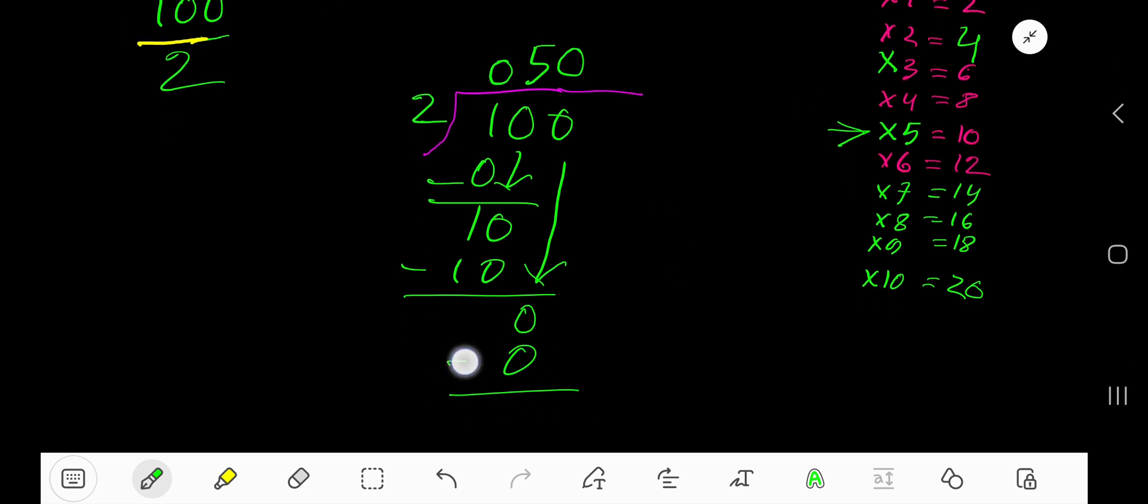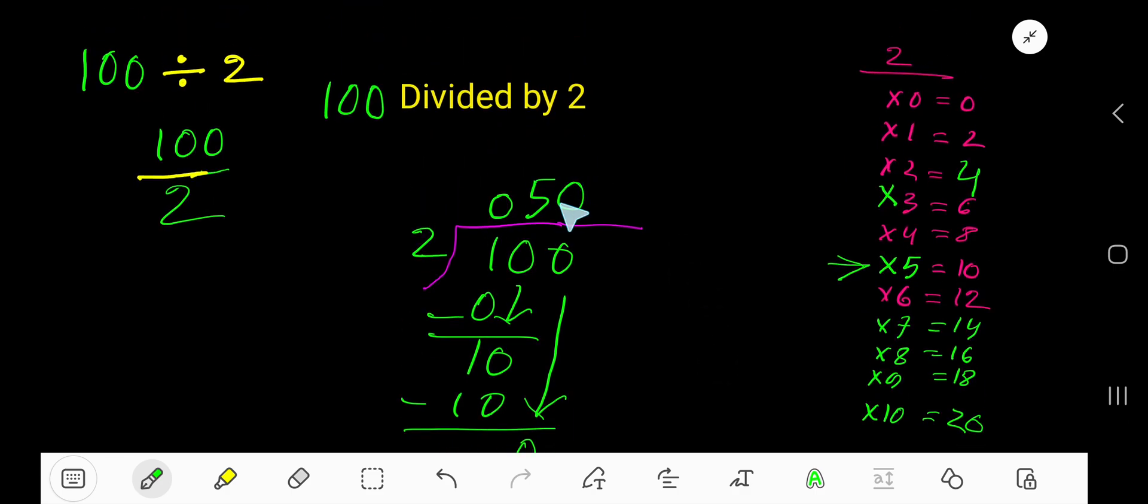If you subtract, you are getting 0. So your answer is 050. This 0 doesn't have any value, so 50, that is 50 is your answer.